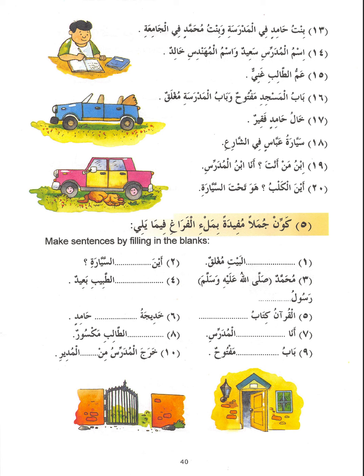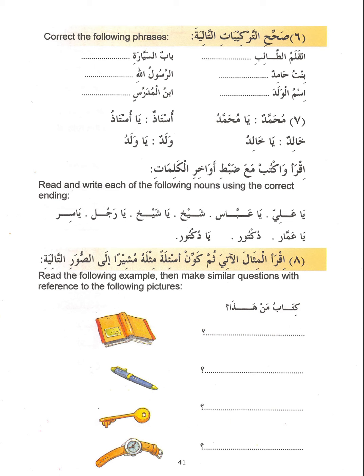In exercise number five, you are told to fill in the blanks and make complete sentences. In exercise number six, you are told to fix the sentences. He also points out the vocative particle rule — when you want to call upon someone using the vocative, the munnada, the one being called, changes form.